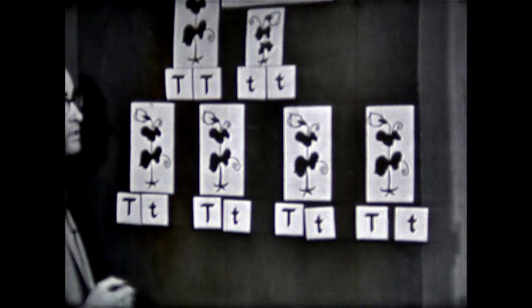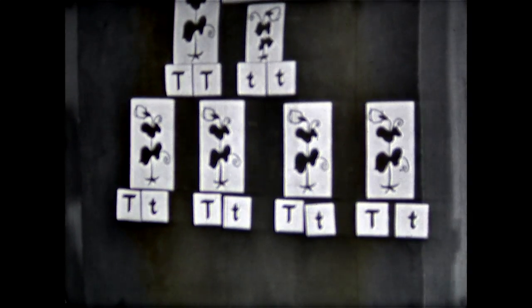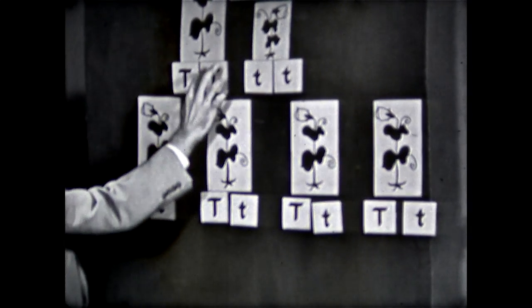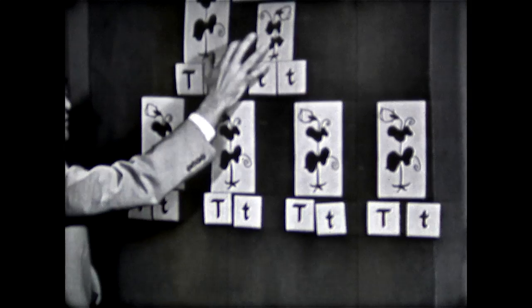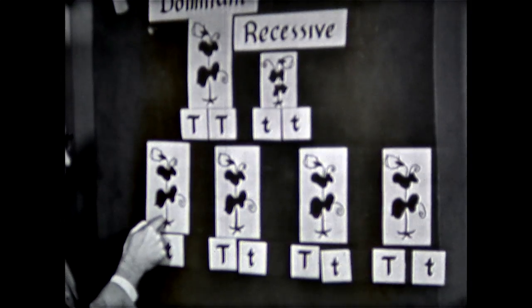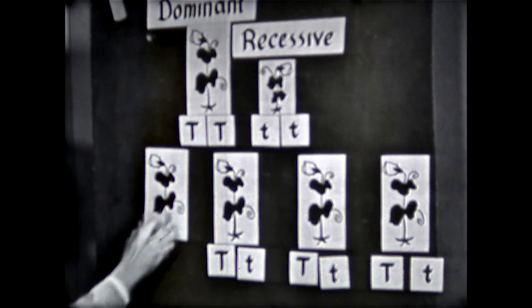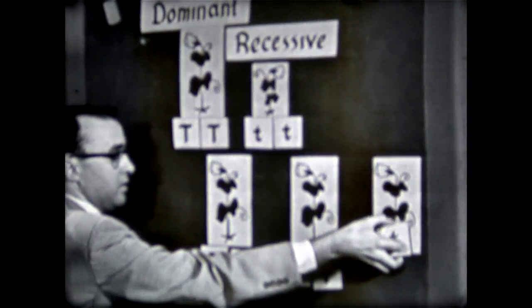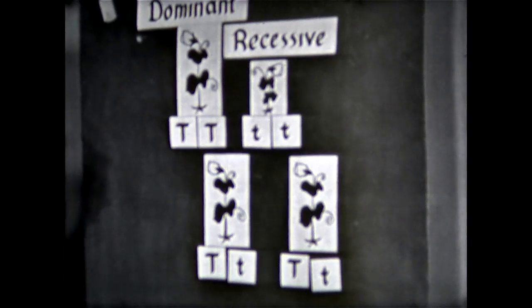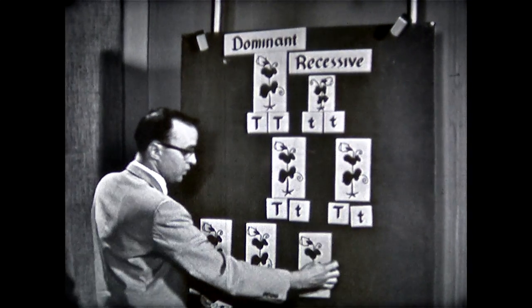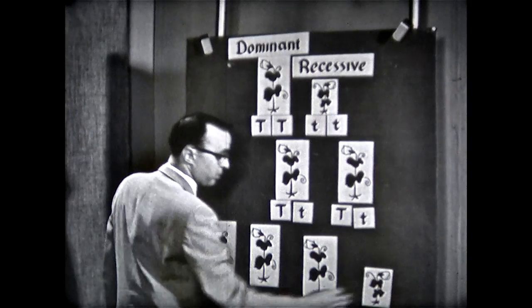Mendel called these plants a hybrid — that is, when we cross two plants with different characteristics, we get a hybrid. We cross tall and short, and this is a hybrid. Mendel next crossed two of the hybrid plants. This time he got three tall to each short plant.